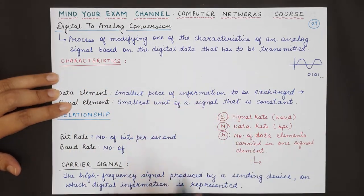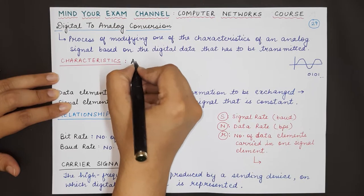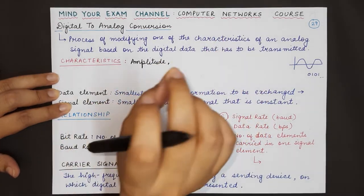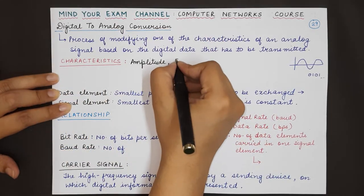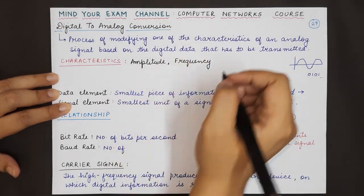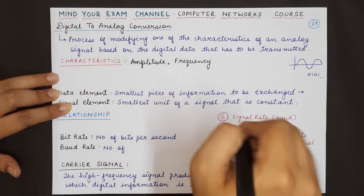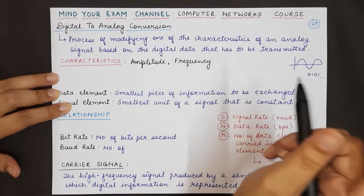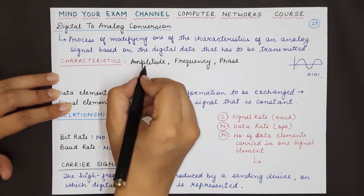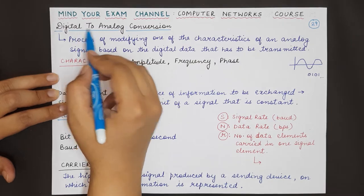So what are the characteristics that will be changed for an analog signal? The three most important characteristics are: amplitude — the highest voltage value achieved by a signal, repeated across its cycles; frequency — how many cycles are completed by a signal in one time unit; and the third one is the phase. By changing these characteristics you can perform digital to analog conversion.